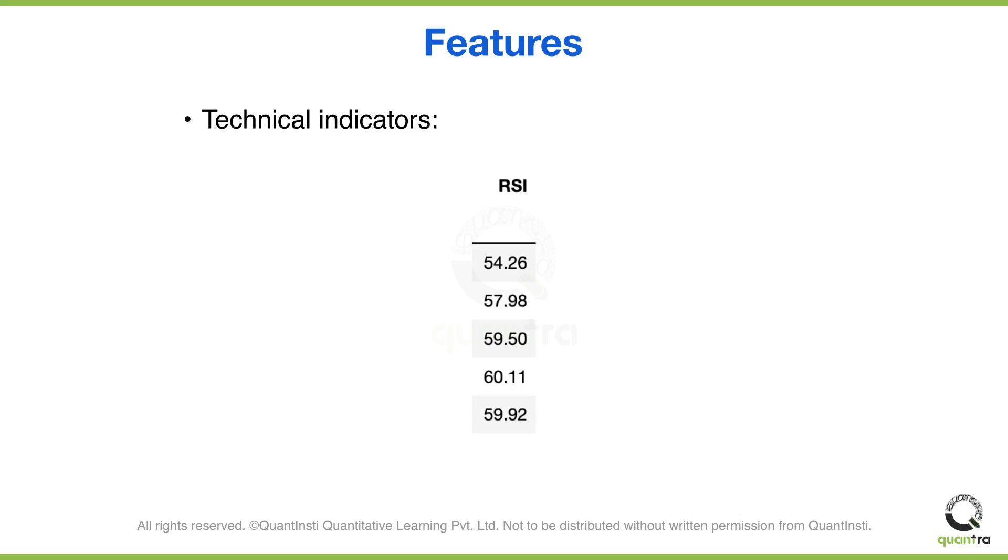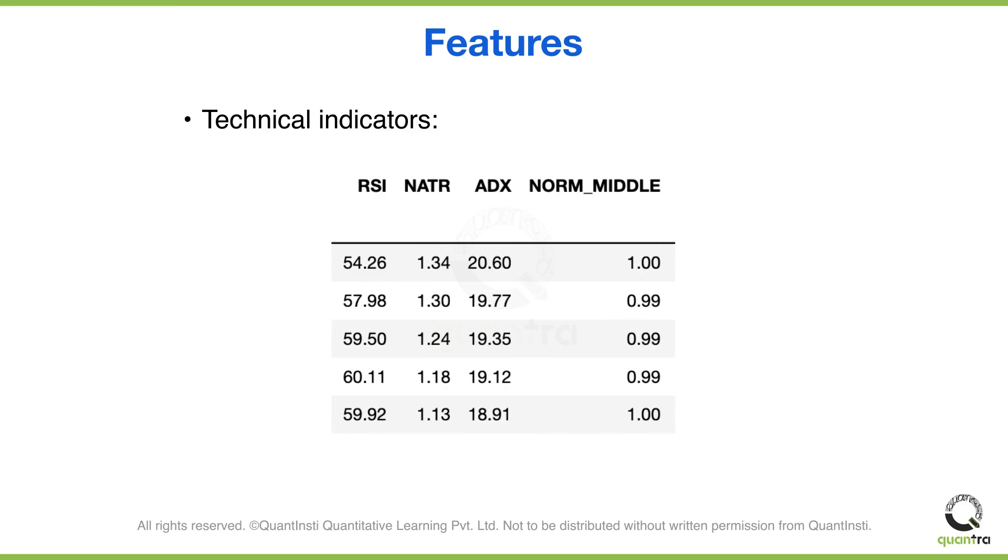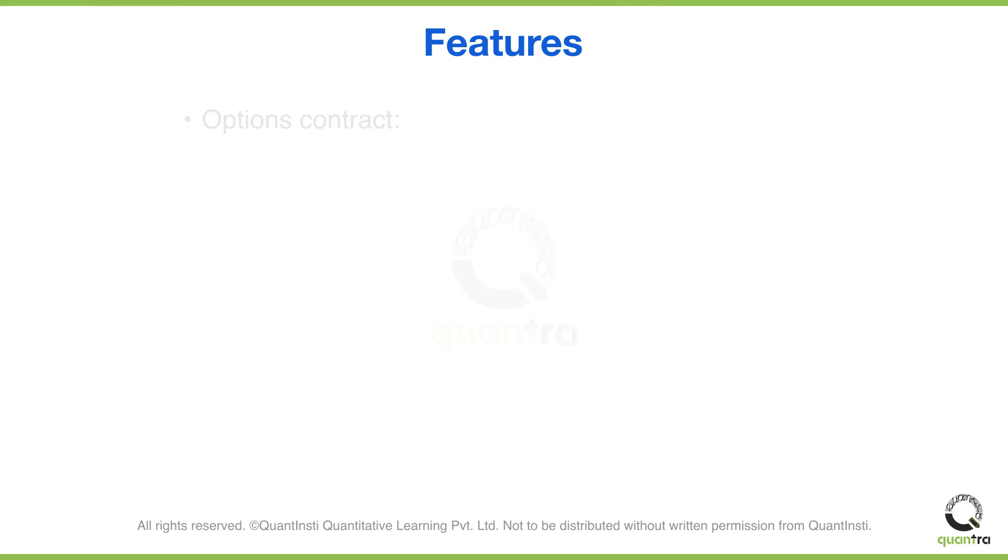The relative strength index of the underlying asset (RSI), the normalized average true range for the underlying data (NATR), average directional index values for the underlying asset (ADX), and the normalized value of the middle Bollinger band (norm_middle). We will also use the current day's IV values and days to expiry to forecast the next day's IV values.